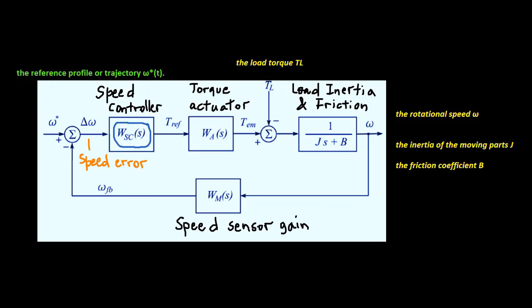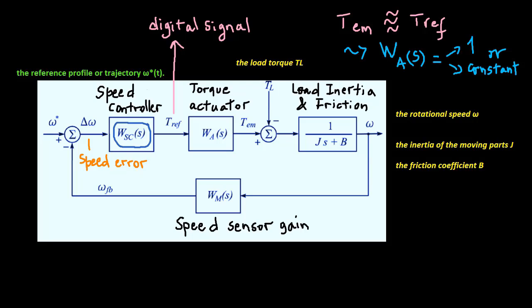In practical implementations, T ref is a digital signal brought to the input of the torque actuator, represented by the block WA of S. In order to facilitate the speed control task, it is desirable to use actuators where the actual torque TM tracks the reference T ref accurately and without delays. Hence, the ideal torque actuators transfer function is one or constant.